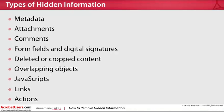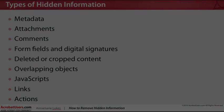Some of the types of information that can be hidden and removed with the Remove Hidden Information tool are metadata, attachments, comments, form fields and digital signatures, deleted or cropped content, overlapping objects, and now in Acrobat 10, also JavaScripts, links, and actions.